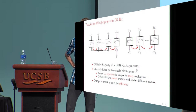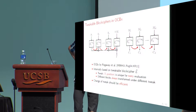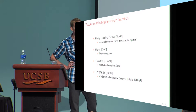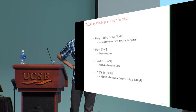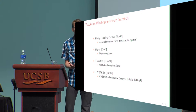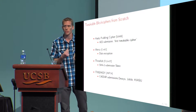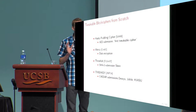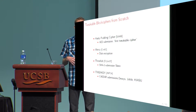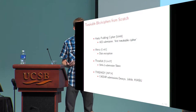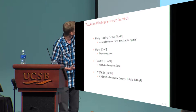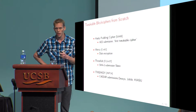The question is how to design tweakable block ciphers. Janek showed already that there are various approaches to do it from scratch. The most recent one is the Tweakey framework, which kind of blends the key and the tweak. In this work, I focus on a generic design where we use an existing primitive like a block cipher and build a tweakable block cipher on top of it.